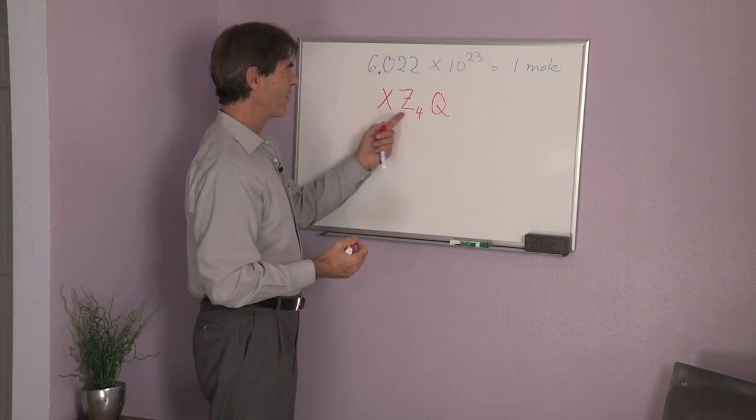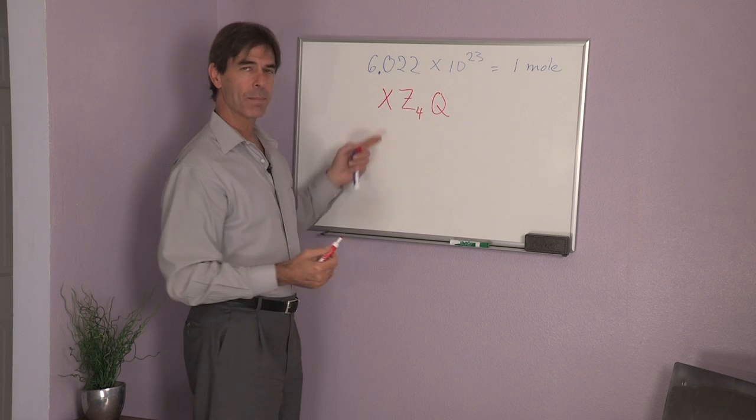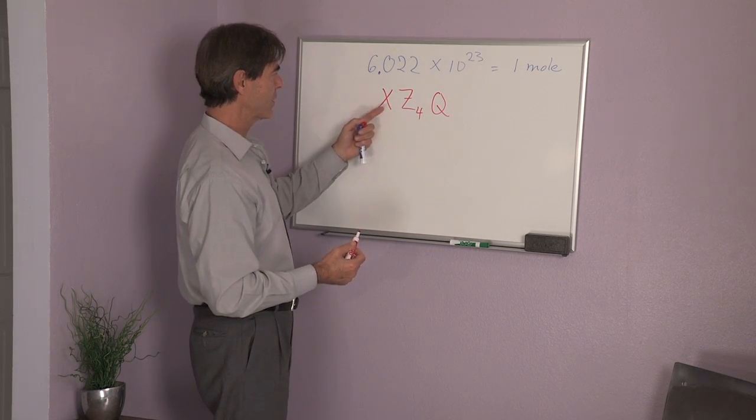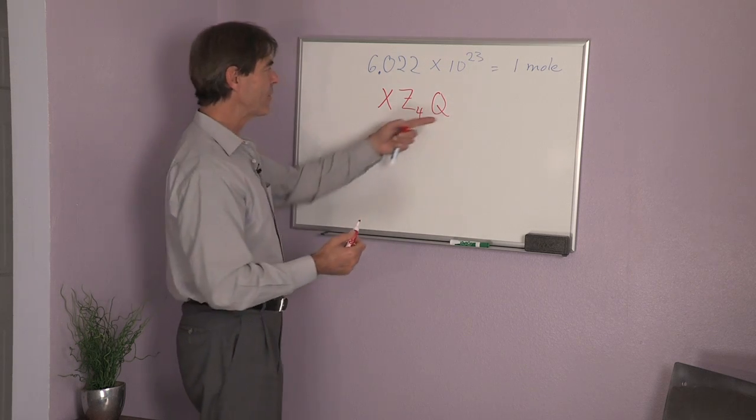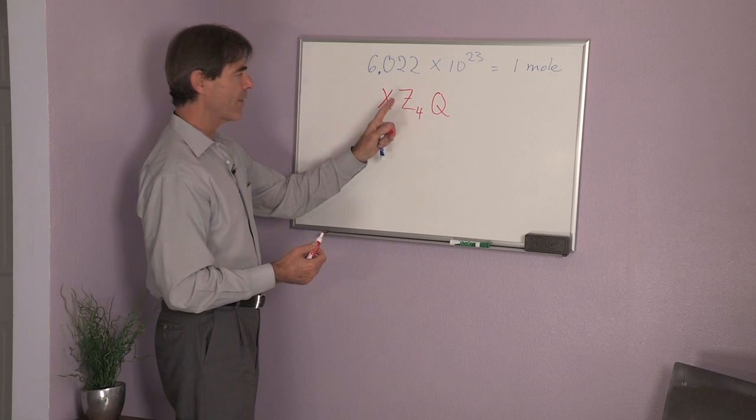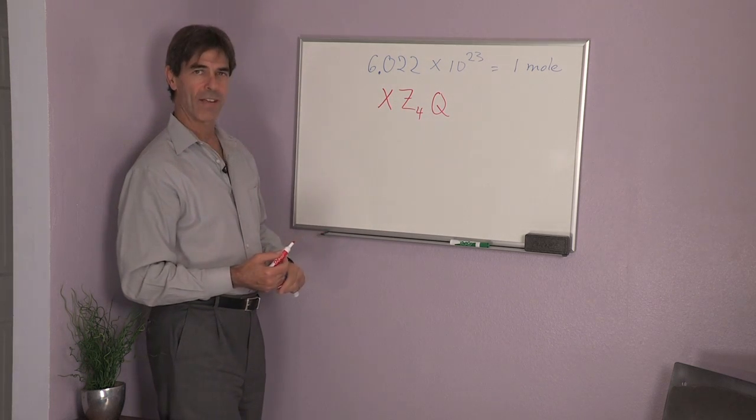These are the various atoms that are in this substance, this component. And there's four Z, there's one X, and one Q in it. If I have a mole of this substance, then I have a mole of Q, I have four moles of Z, and a mole of X.